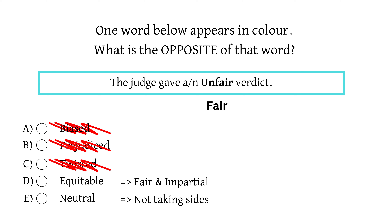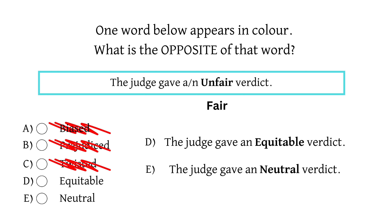So we're going to insert it into a sentence and see which sounds better. The judge gave an equitable verdict. The judge gave a neutral verdict. Whilst both sentences make sense, equitable specifically conveys fairness, making it the closest opposite of unfair. Neutral implies a lack of bias, but doesn't necessarily ensure fairness, as neutrality can sometimes mean inaction or a lack of judgement.